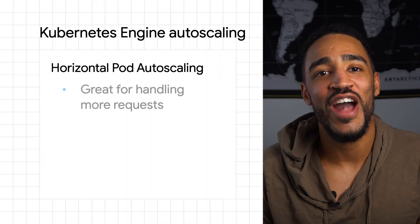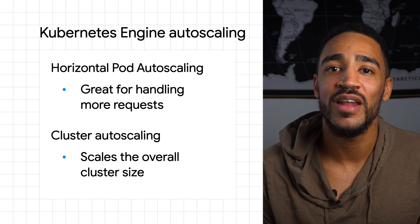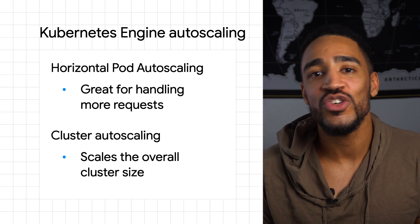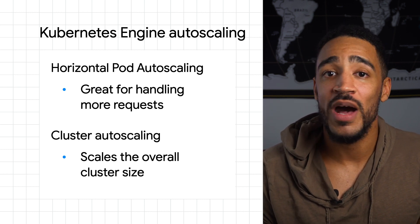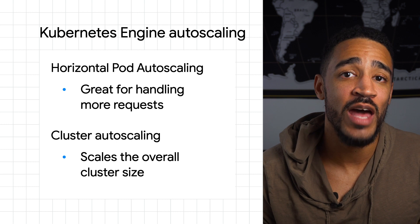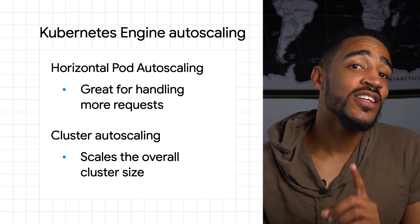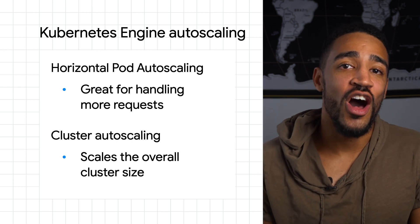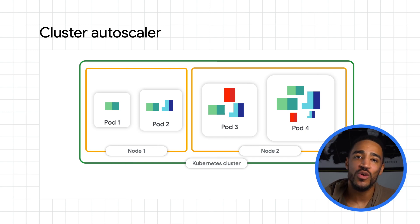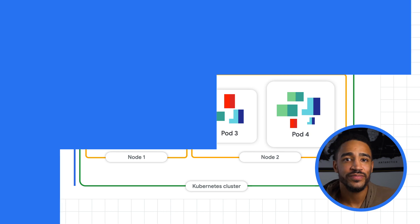This is great for handling more requests when you have enough space to run more pods on. But if there's no space to run additional pods, then even if the Horizontal Pod Autoscaler wants to add more, it's out of luck — unless you're using Cluster Autoscaler. What this does is it adds more resources to your clusters, in this case machines, that pods can run on.